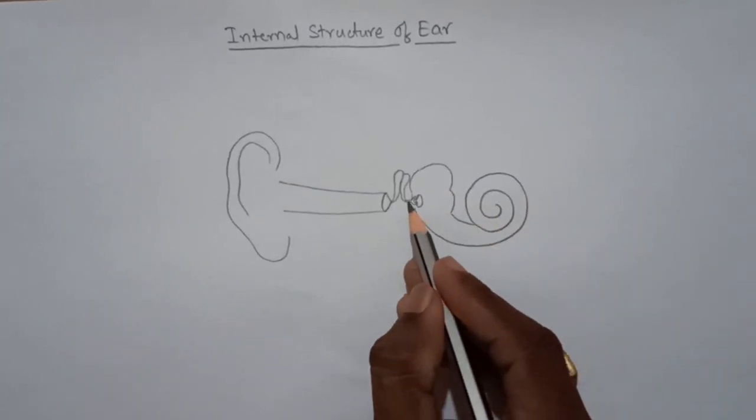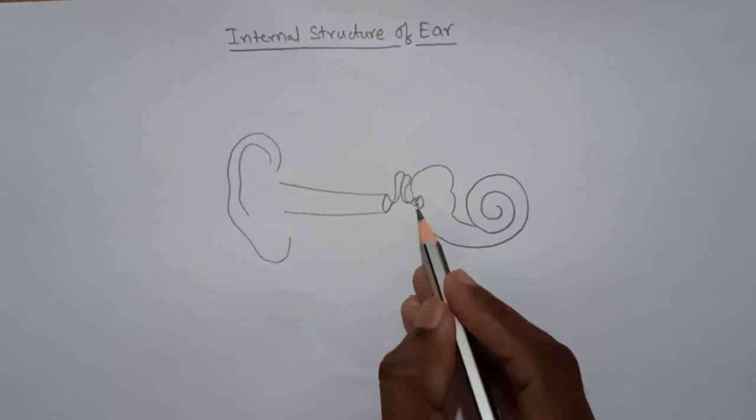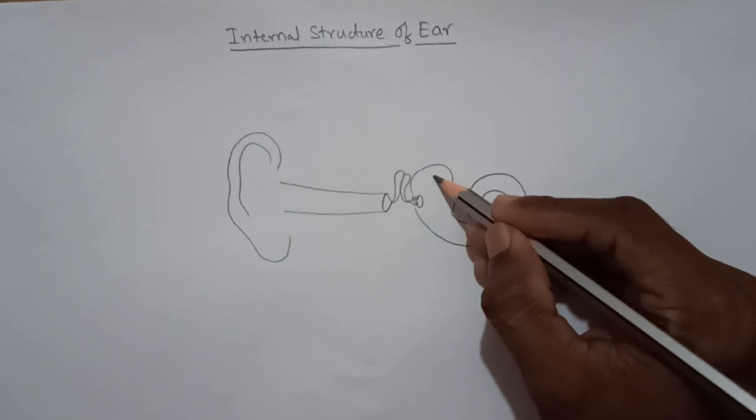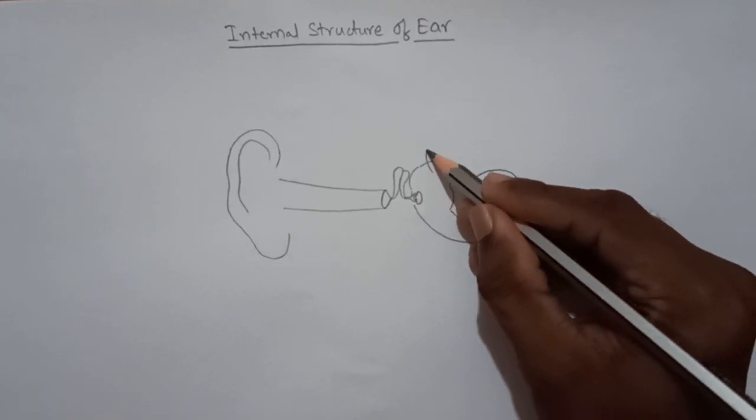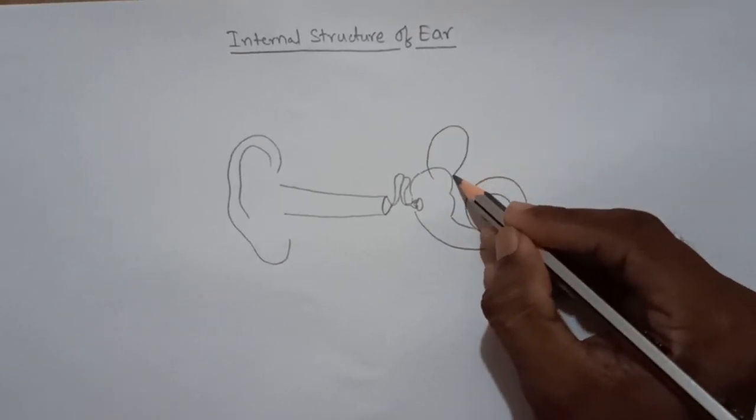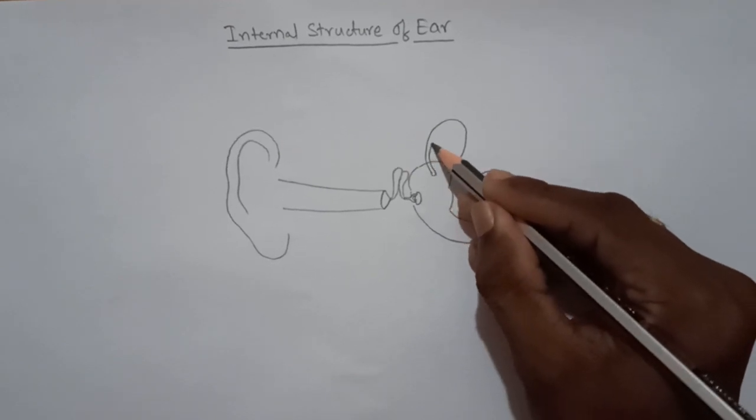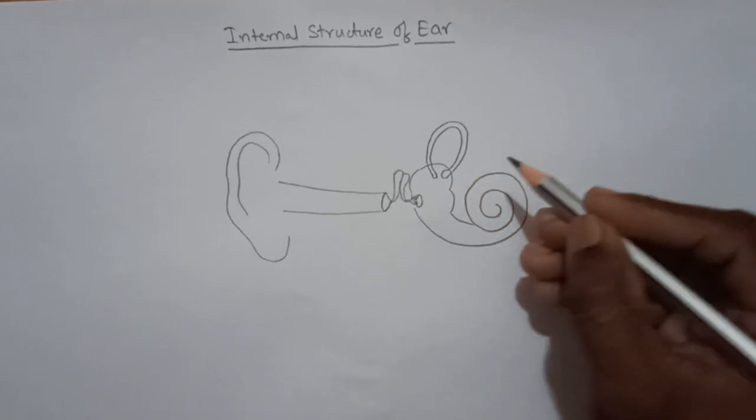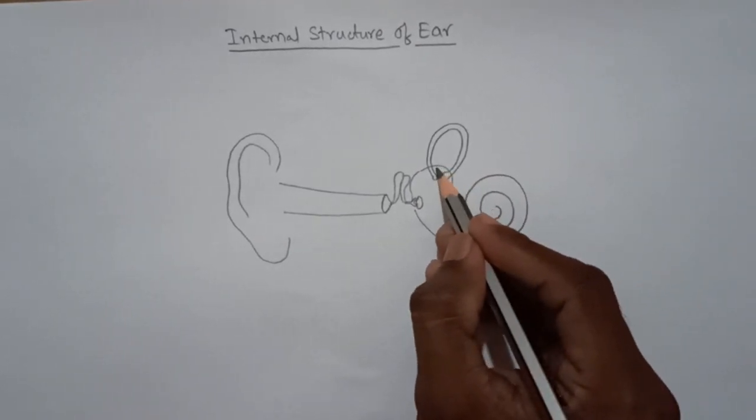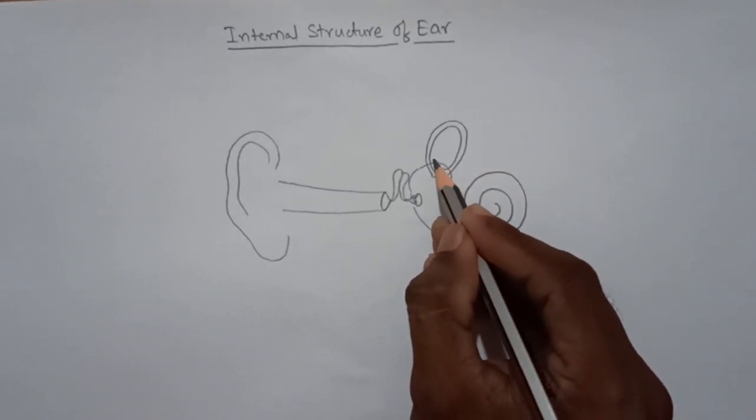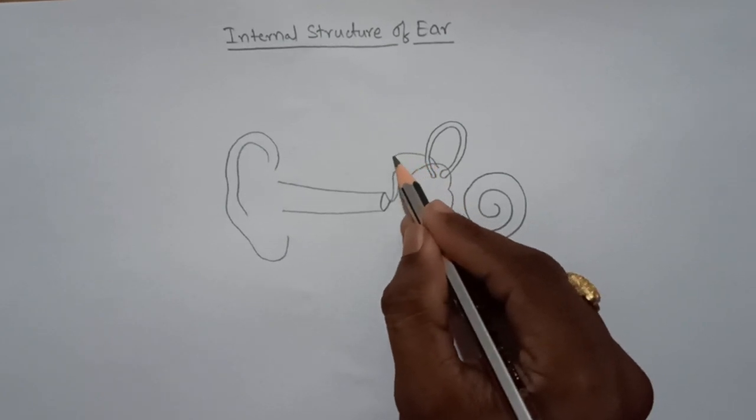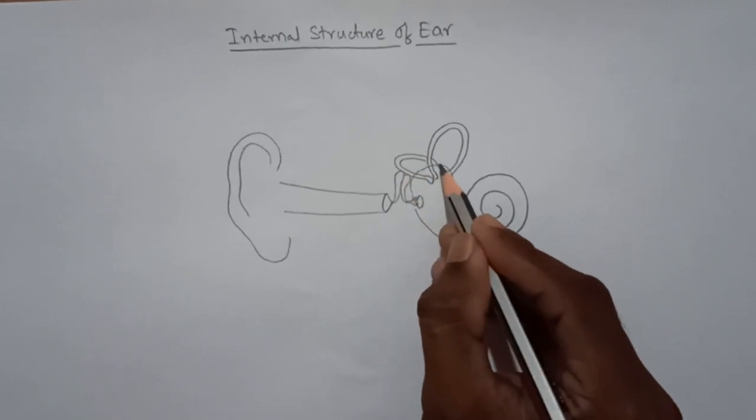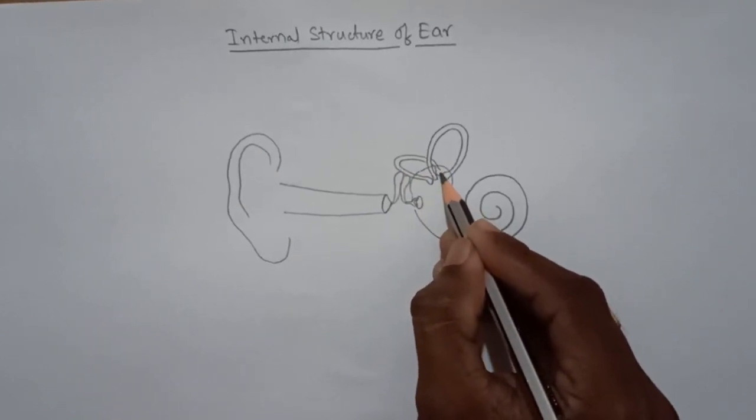Here we have to draw three semicircular canals. These three semicircular canals are arranged at 90 degrees to one another.